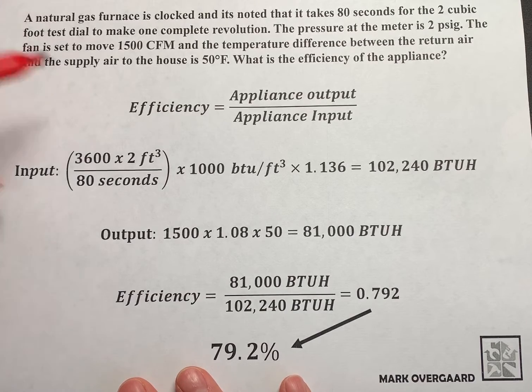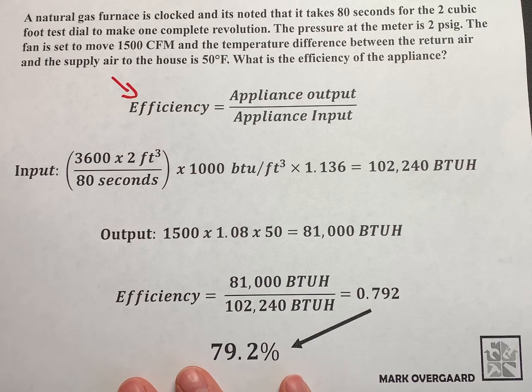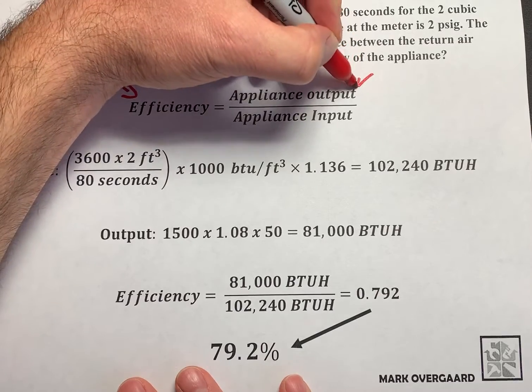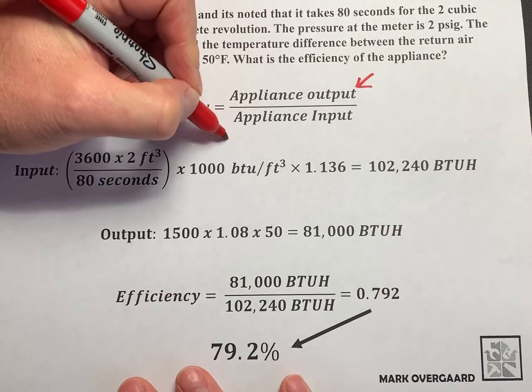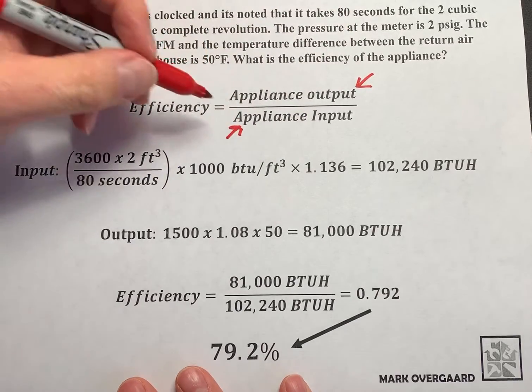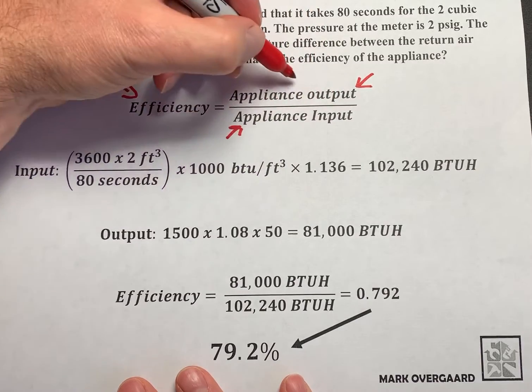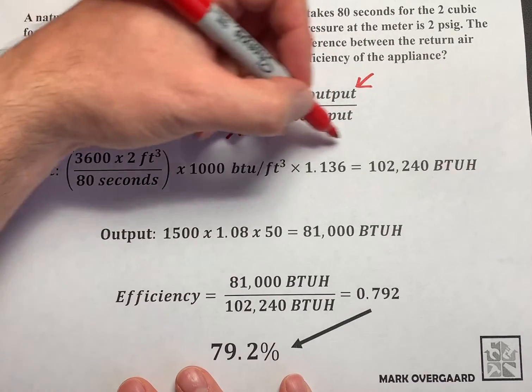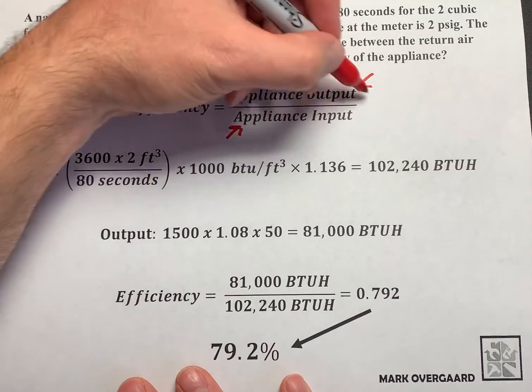Now we need a starting point and that is the efficiency formula which is the appliance output divided by the appliance input. So basically how much energy or gas we put in divided by how much heat we get out.